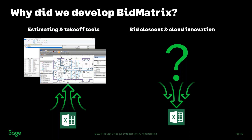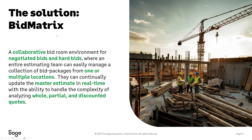Because there was no solution at the time, people would be told to do that part in Excel — using that as an excuse to push them back to Excel for the bid closeout piece. What you're going to see today is that those challenges can be overcome with the Sage Bid Matrix product.